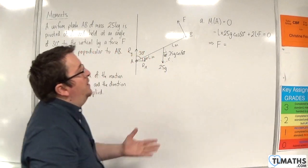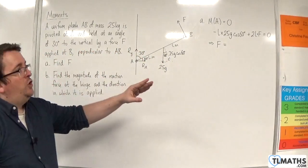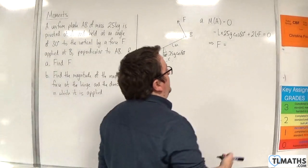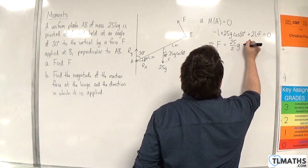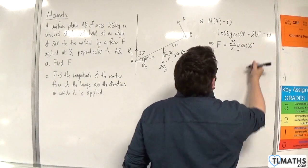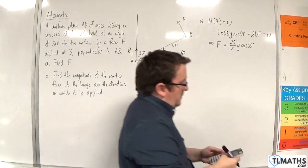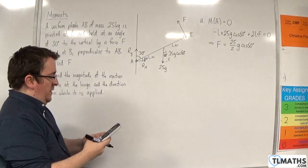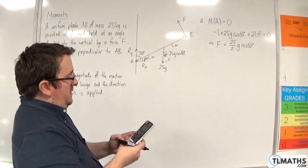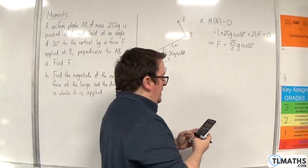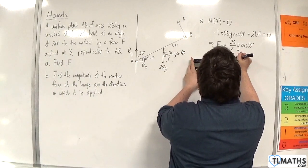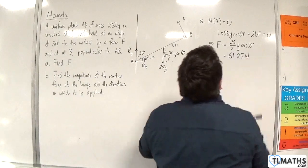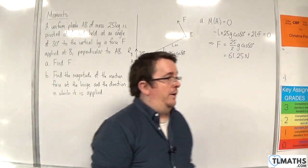Then we are 2L away from the F force, which is going around anticlockwise, so plus 2L times F equals 0. F, if we divide through by L, move the 25G cosine 60 over the other side, divide through by 2, will be 25 halves G cosine of 60. So 25 divided by 2 times 9.8 times cosine of 60 is 61.25 Newtons. That is F.